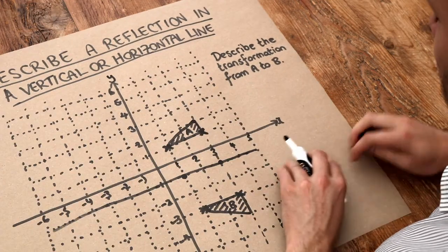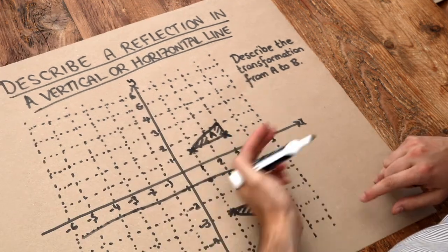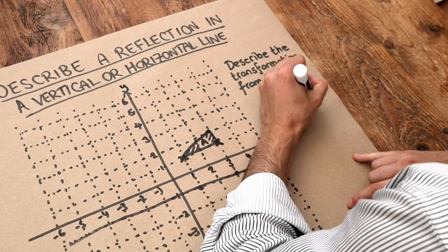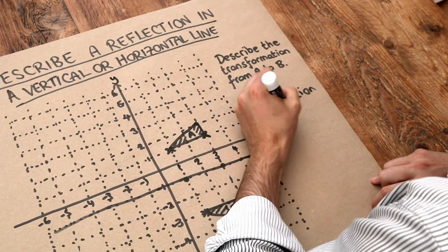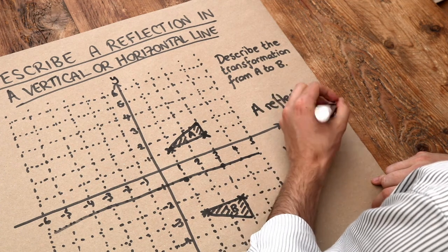So to get the marks in an exam, we need to do two things. We need to say what type of transformation it is, which is a reflection as hinted by the title. And then we need to give the equation of the line we're reflecting in. So we say in the line, and you could say with equation, and then give that equation.